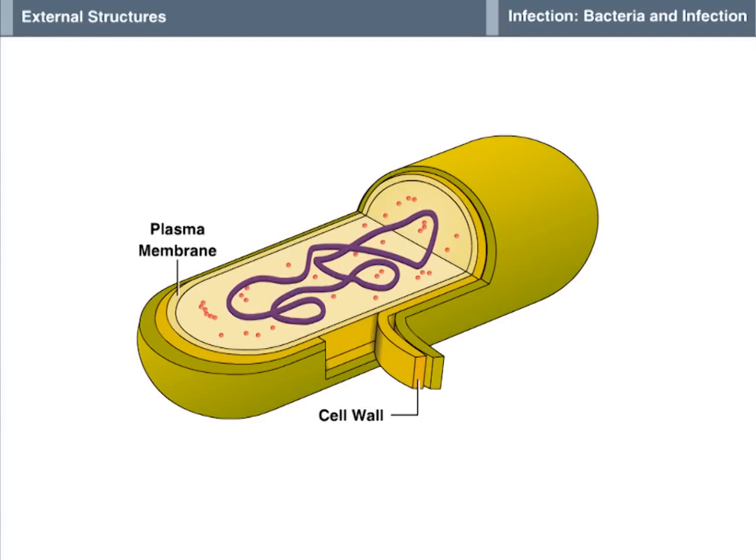A capsule is a gel-like compound that surrounds the exterior of some bacterial cells. The gel compound is produced inside the bacterial cell, excreted outside, and attaches firmly to the cell exterior.